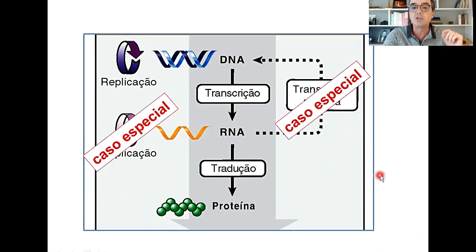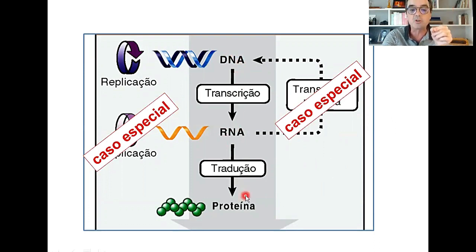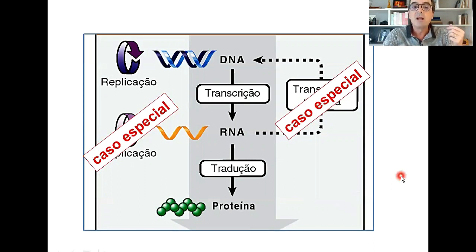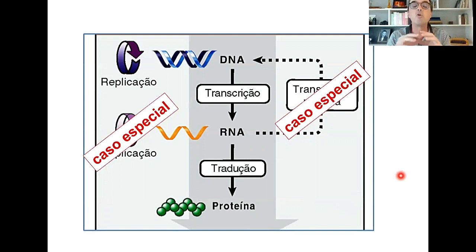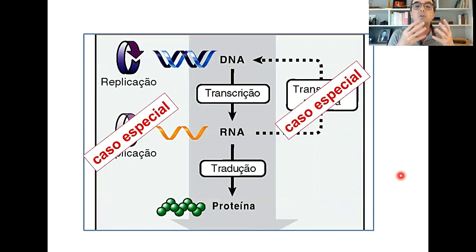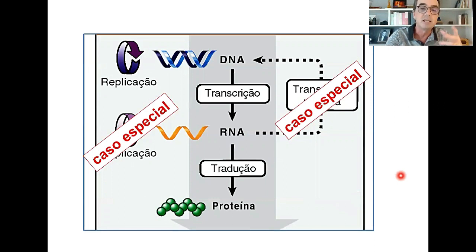O dogma central da biologia molecular de Crick, mais do que dizer que a informação corre no sentido de DNA para RNA para proteína, afirmava que ela não poderia ocorrer no sentido inverso, a partir das proteínas. Informação não pode ser revertida de proteínas em direção aos ácidos nucleicos. Aqui nós passamos por essa grande compreensão de como a informação de DNA gera material molecular na forma de proteína, seja pela ação das proteínas como enzimas, receptores, hormônios ou proteínas estruturais.